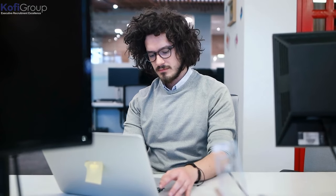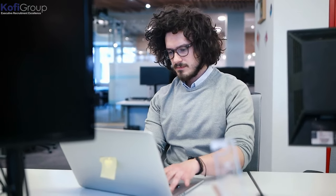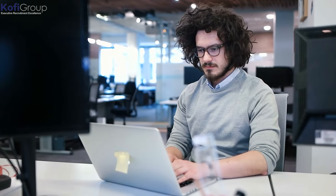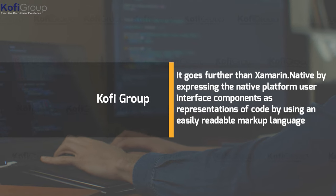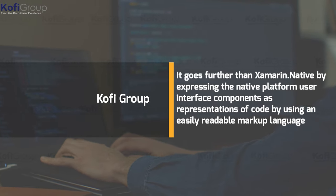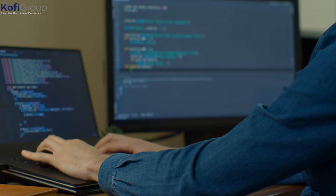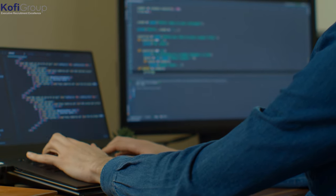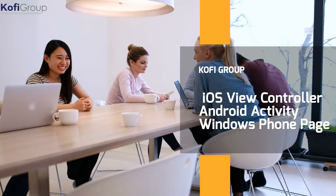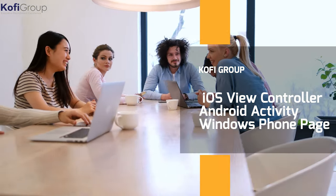Building an app with a single screen? You're going to have a bad time. Just think about how you're going to cram all that data and user interaction into a single screen — you can't do it well. Xamarin Forms does this by using pages. It goes further than Xamarin Native by expressing the native platform UI components as representations of code using an easily readable markup language. If Xamarin Native deals with the shared backend code, then Xamarin Forms effectively operates in the same way as iOS View Controller, Android Activity, and the Windows Phone Page — replacing the native elements with yet more shareable code across the platforms.